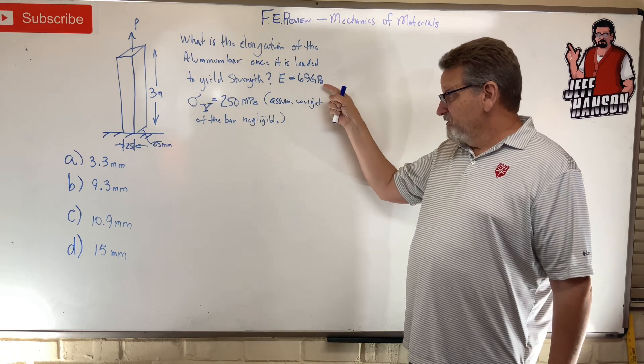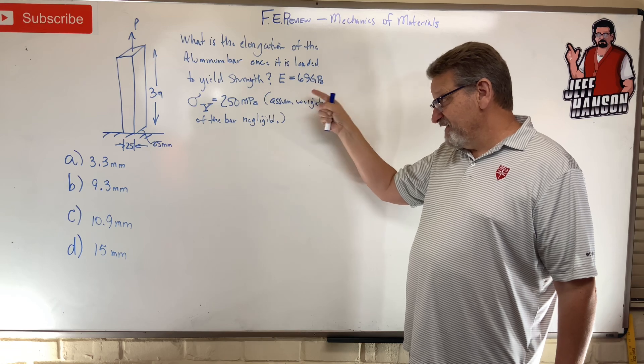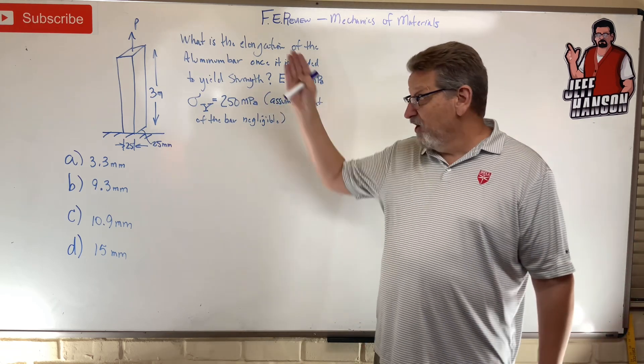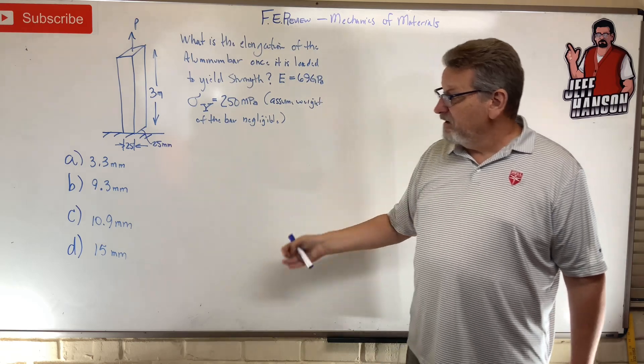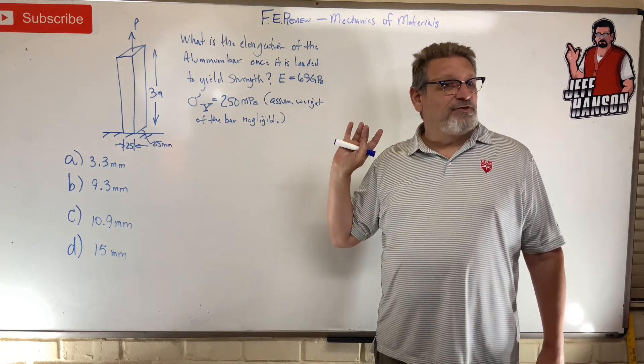Okay, so find the elongation. They give us E, the modulus of elasticity, and they give us that yield strength. What do they not give us? They don't give us P.